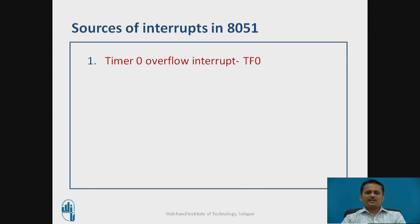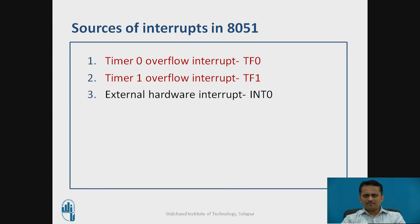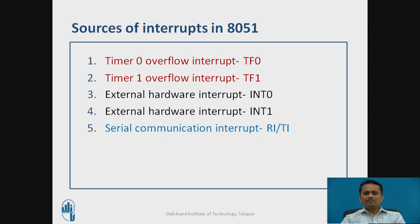There are different sources of interrupts in the 8051 microcontroller. The first source is the timer — there are two timers, so two interrupts are possible: Timer 0 interrupt and Timer 1 interrupt. Then there are external hardware interrupts on pins INT0 and INT1. The fifth interrupt may occur due to serial communication via the UART module available in the 8051.